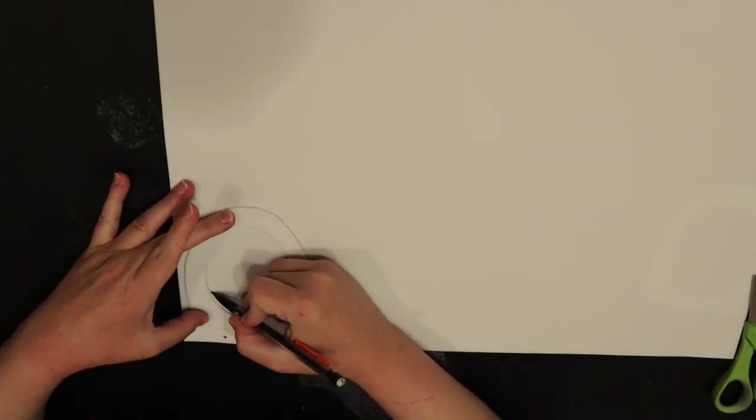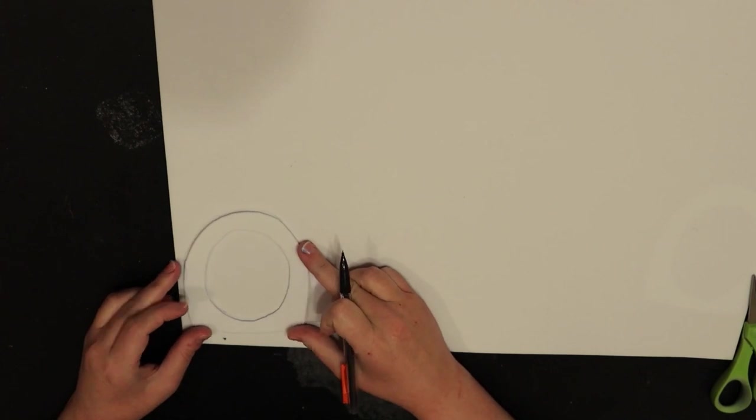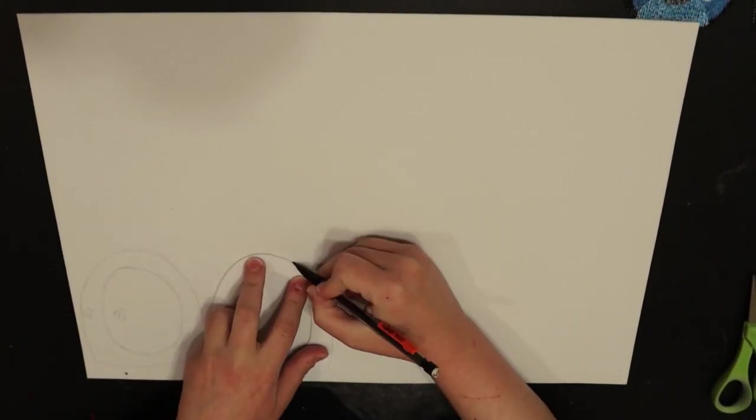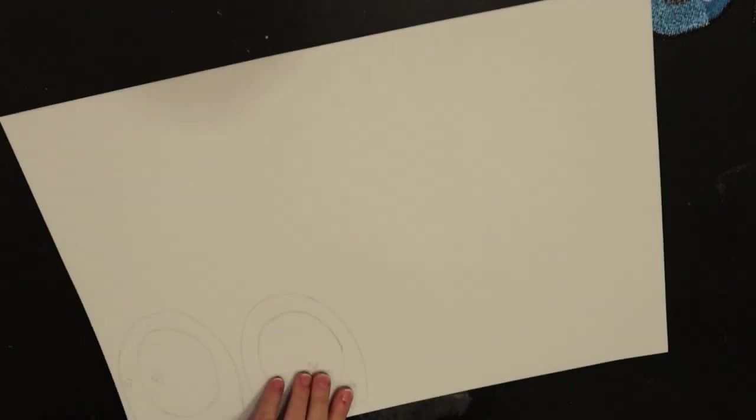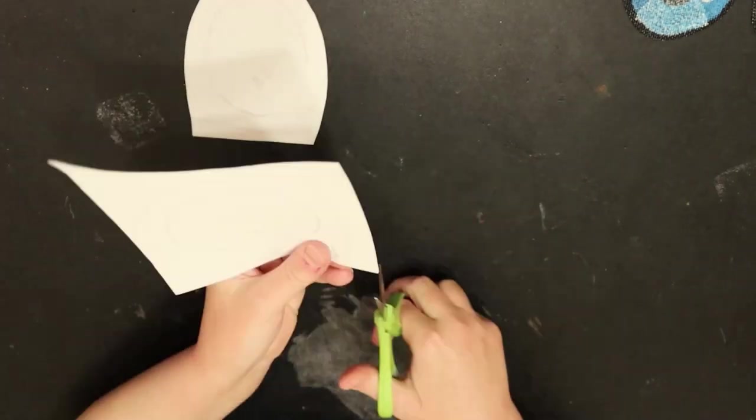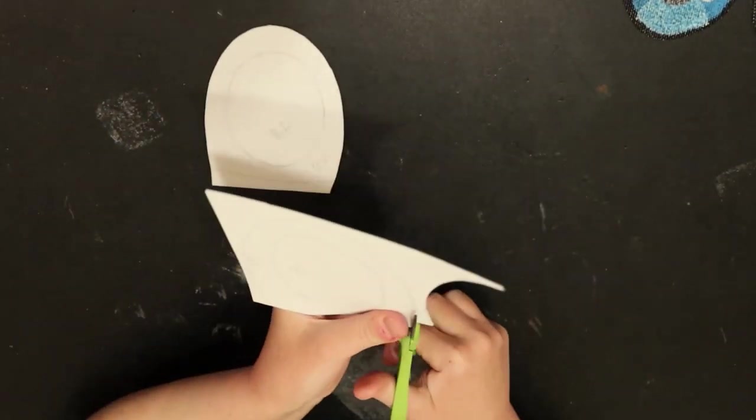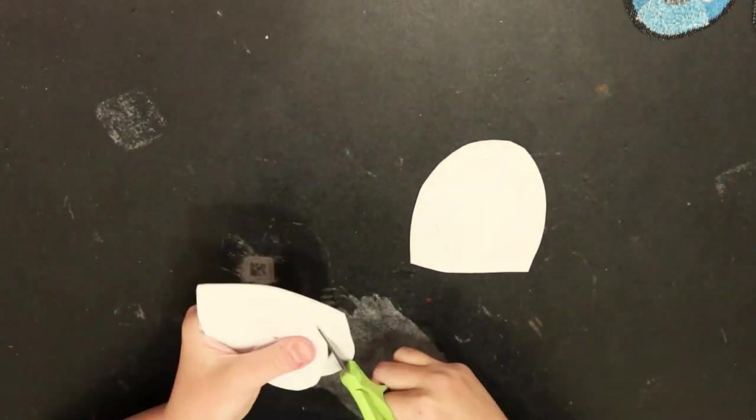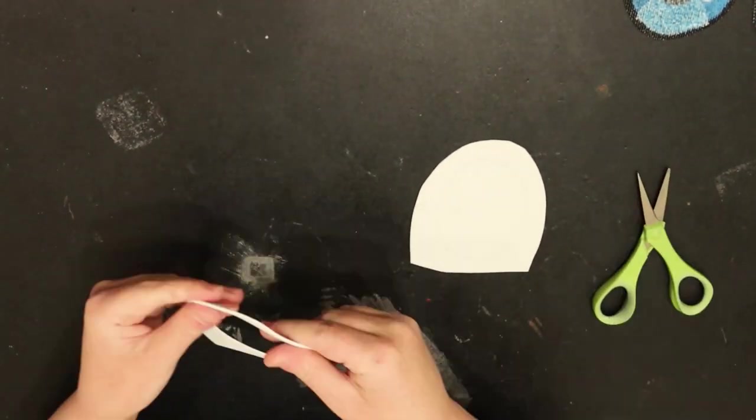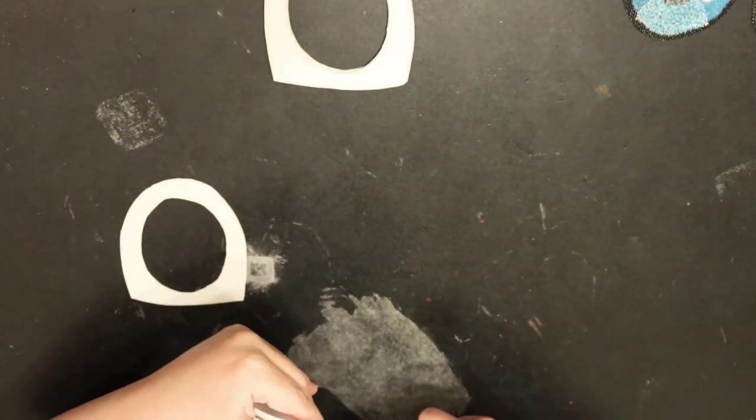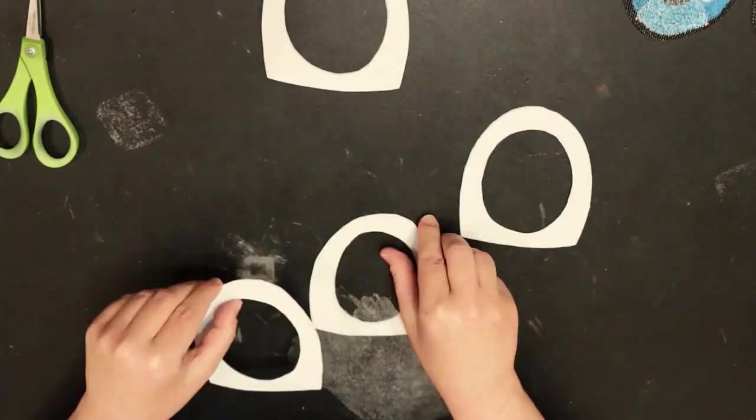All right so I'm going to take my template for my eye again and trace it on to some more craft foam. Because I want to double up the foam to give more durability to the eyes themselves because Carrot 1.0 I did not do that and his eyes are very flimsy and after like a year year and a half his eyes are starting to kind of bow inward the mesh and the foam so I'm going to give it more durability by doubling up the foam.